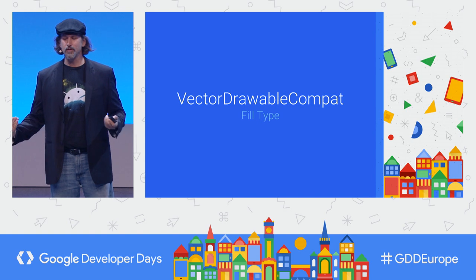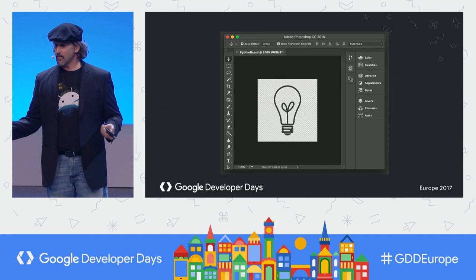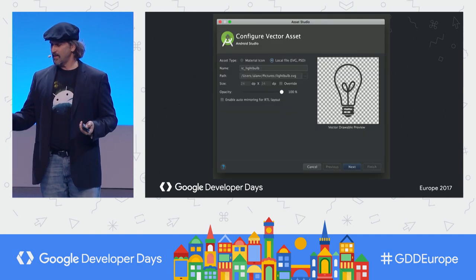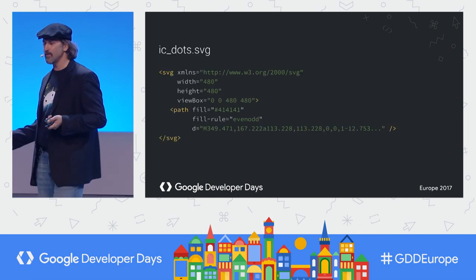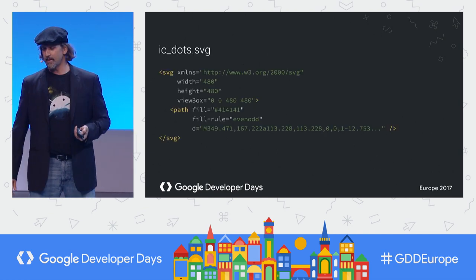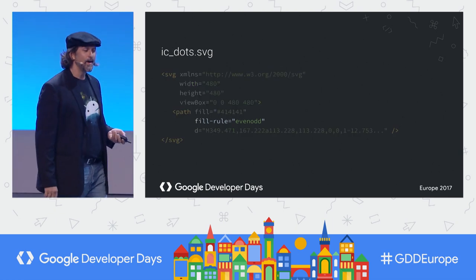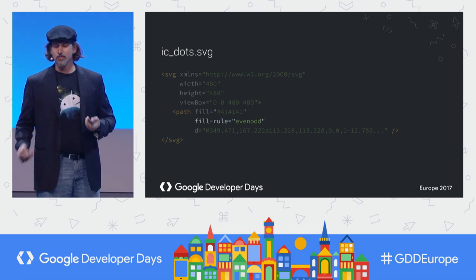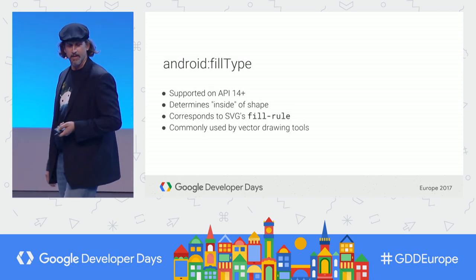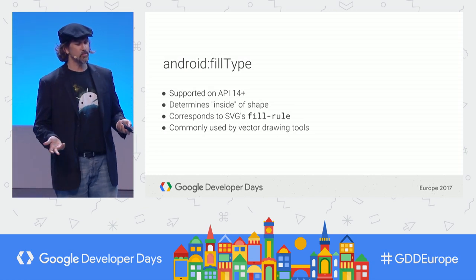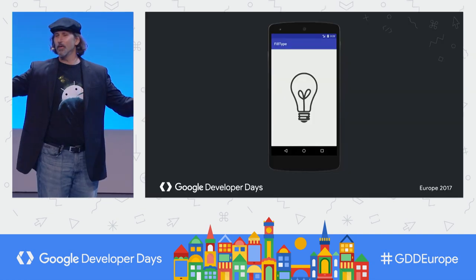We bring improvements to vector drawable giving it feature parity with support for fill types. Before, you could get weird artifacts because of even-odd fill rules — we didn't support that. There was a big TBD in the source code. Fill rule defines how the renderer decides which regions are inside and outside. We fixed this finally in SDK 24 and backported it to API 14 plus.